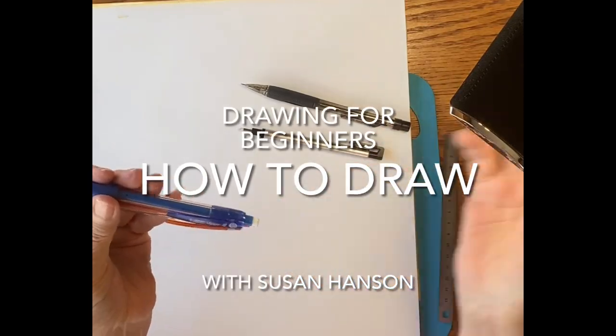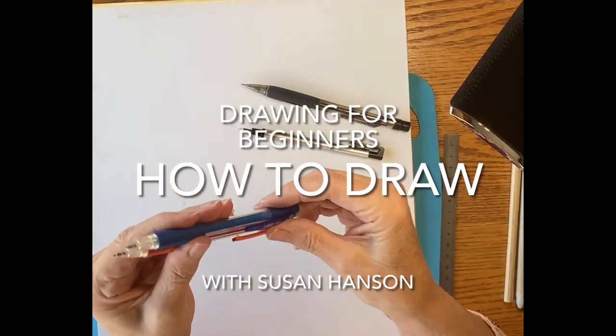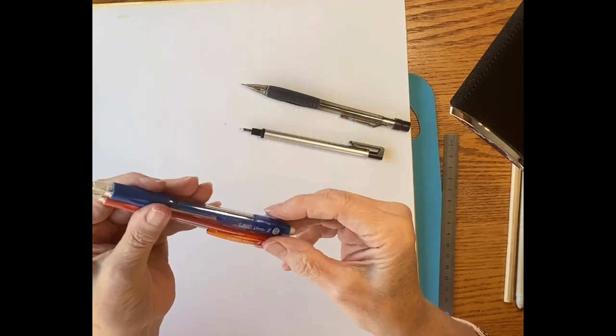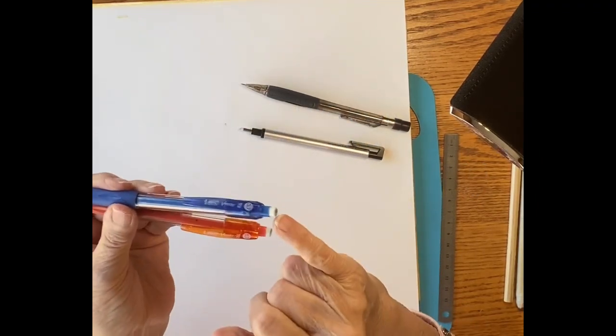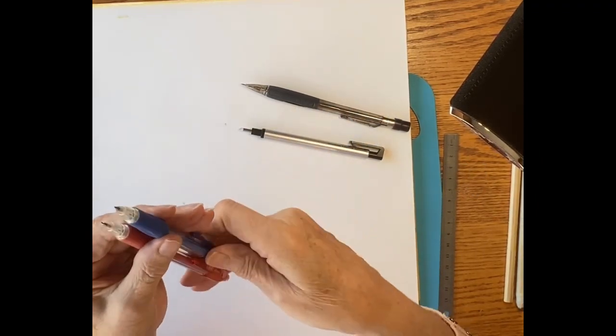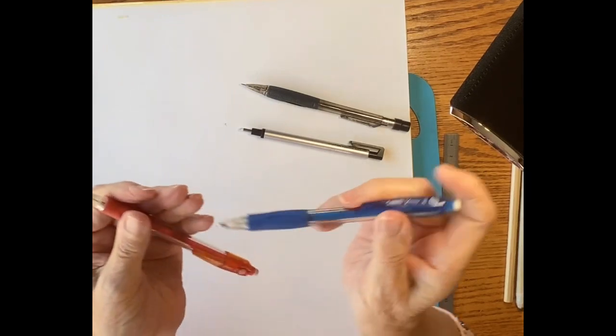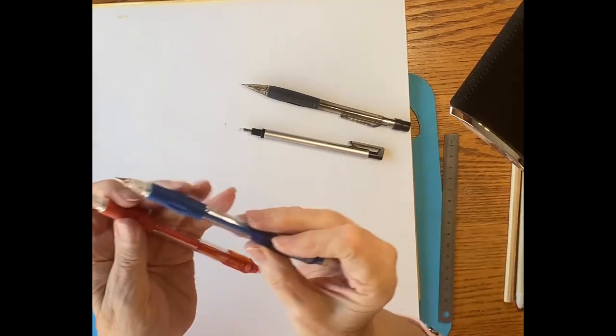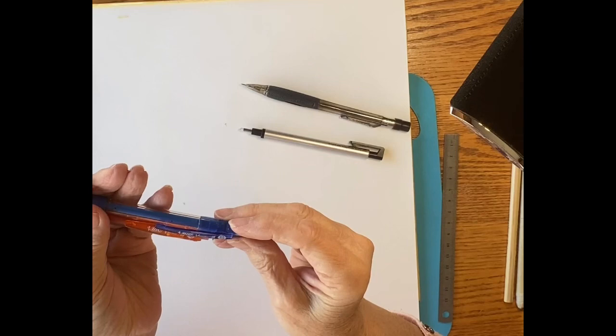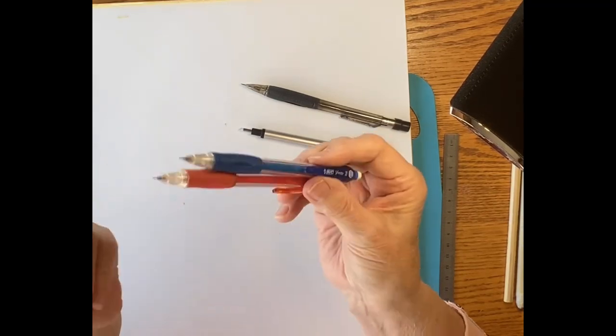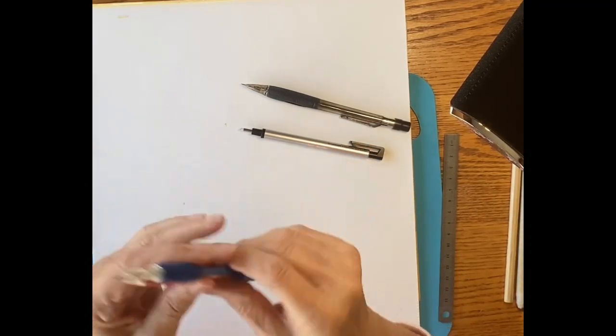I just picked these up because I was desperate at the Dollar General and they came with erasers on the back and I could use those. And so these are retractable pencils and they're 0.7s. So it's a little darker. These guys are both the same.